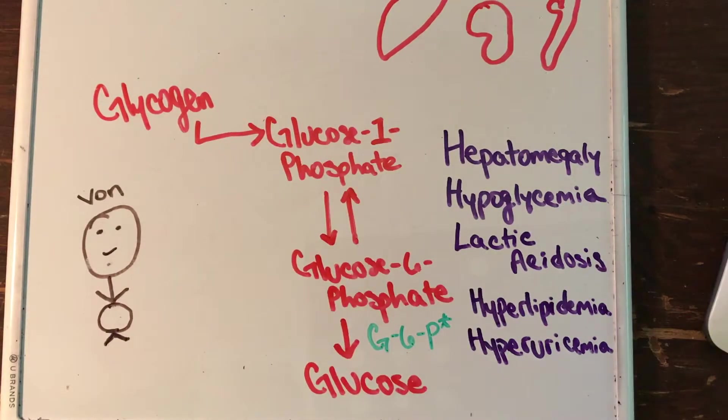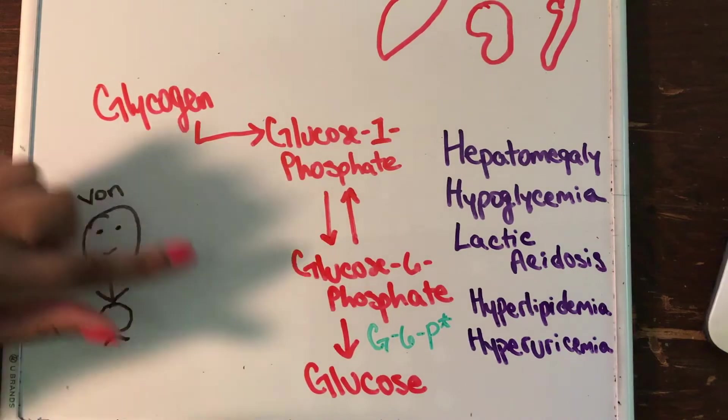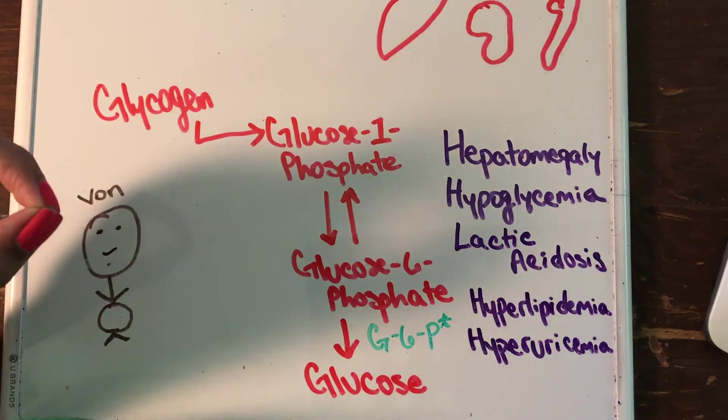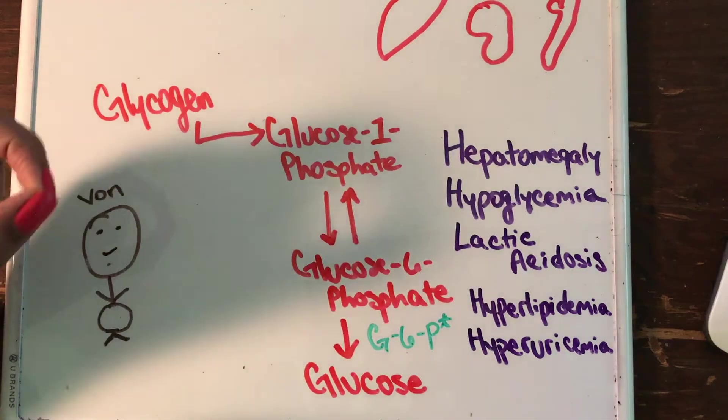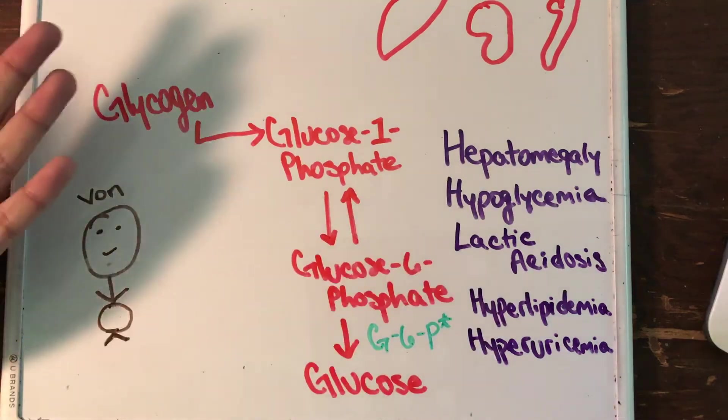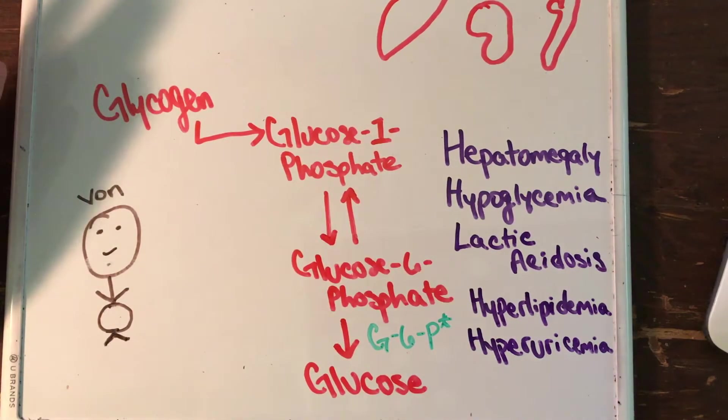The only other thing that I forgot to mention is that because you can't convert it into glucose, you're going to have a buildup of glycogen, the structure of glycogen specifically in the liver. And now that we covered all the symptoms, you know, you should know Von Gierke's really well.